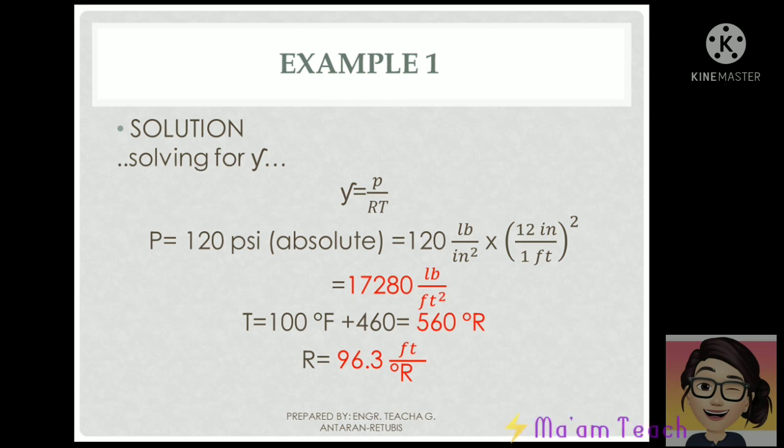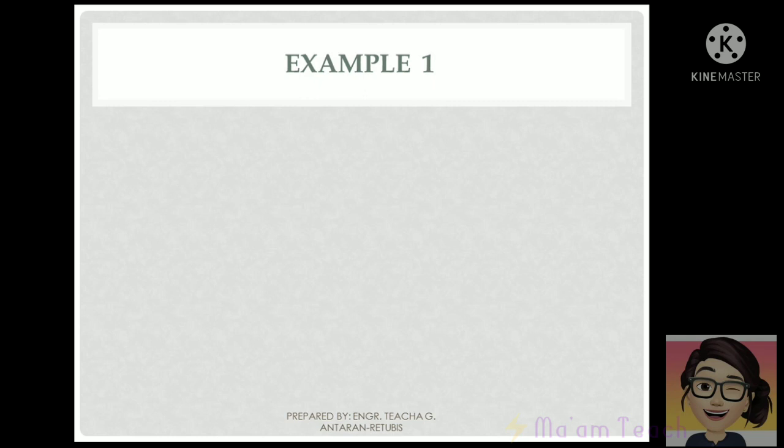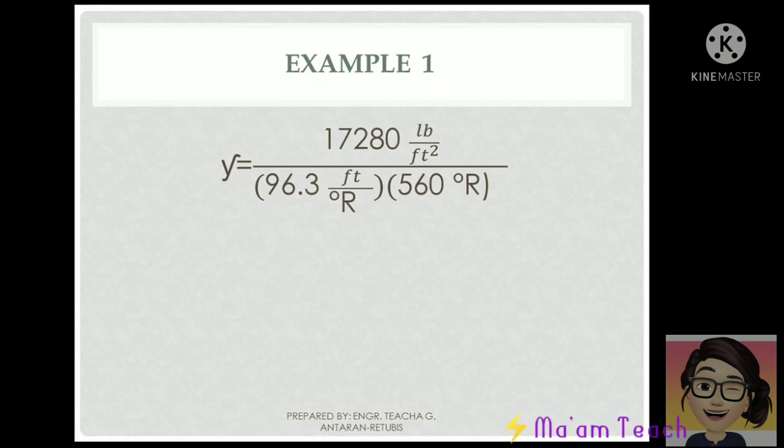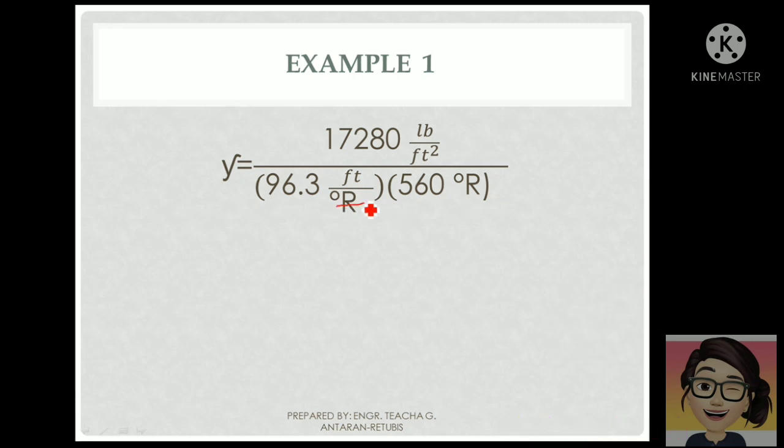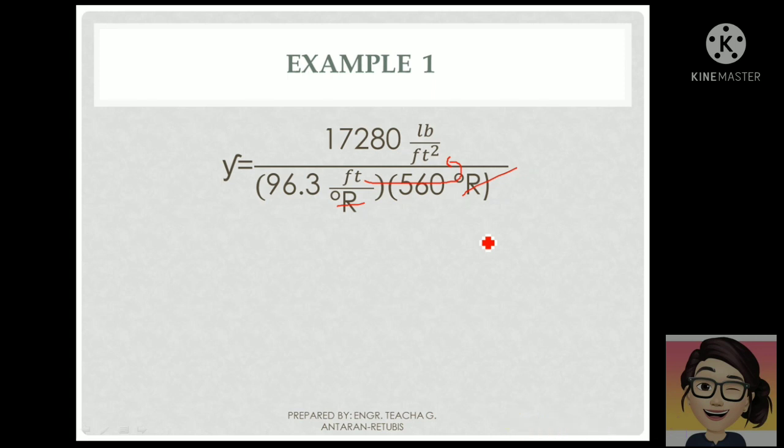Going back to the formula, let us now substitute. For our pressure, we have 17,280, and for our temperature, 560. Notice that the degree Rankine will be canceled out and the feet will be multiplied. So our unit of specific weight will be pounds per cubic foot.